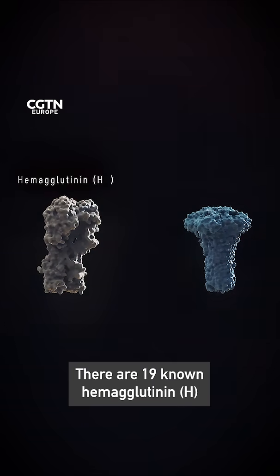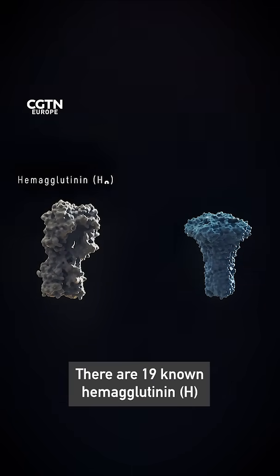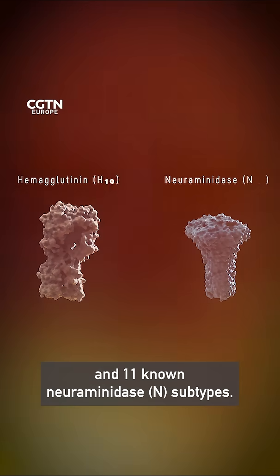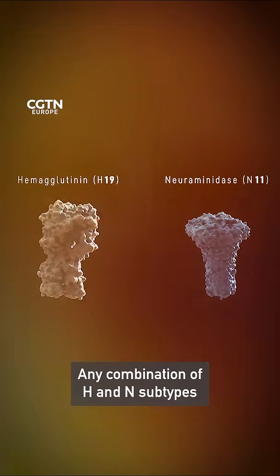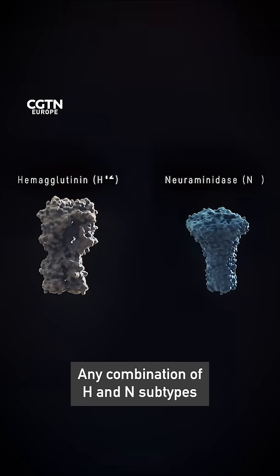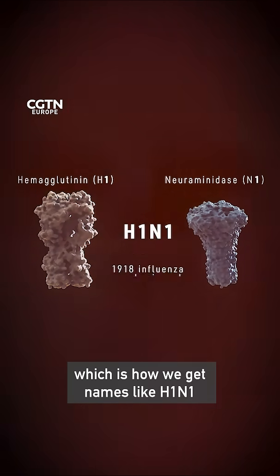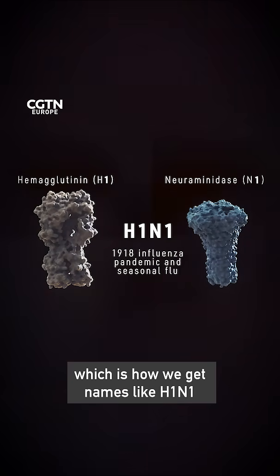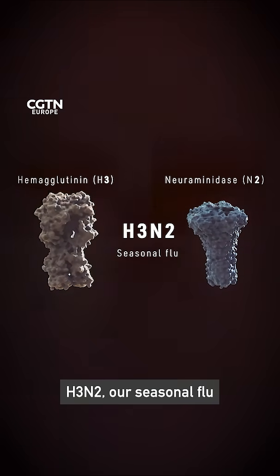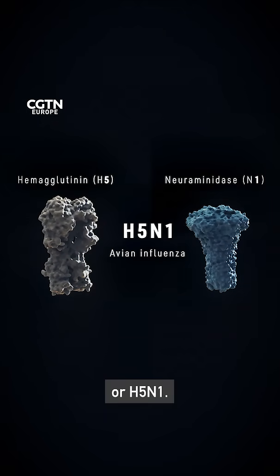There are 19 known hemagglutinin H and 11 known neuraminidase N subtypes. Any combination of H and N subtypes is possible, which is how we get names like H1N1, H3N2 — our seasonal flu — or H5N1.